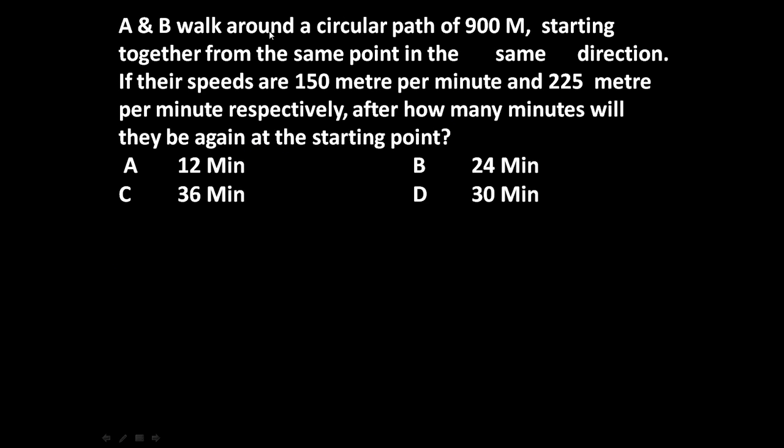Friends, to solve such type of question, because the track length is 900 meter, speed of A is 150 meter per minute and speed of B is 225 meter per minute, we have to determine when they will be meeting at the starting point.